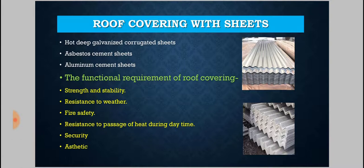The functional requirements of roof covering are as follows. First is strength and stability — materials used in roof covering should have sufficient strength and must be stable so they can be fixed properly with roofing elements. Second is resistance to weather — materials should be tough enough to withstand all adverse environmental effects. Third is fire safety — materials used should be fire resistant; asbestos sheets, for example, are highly fire resistive.